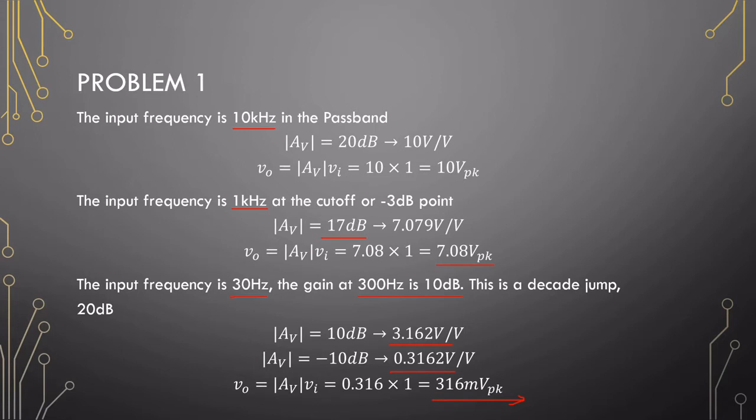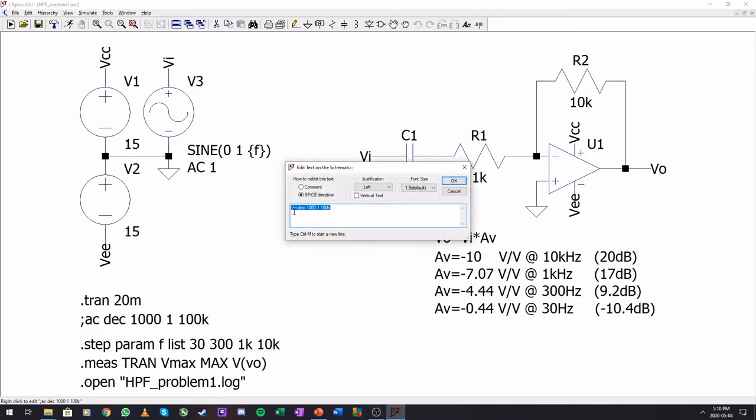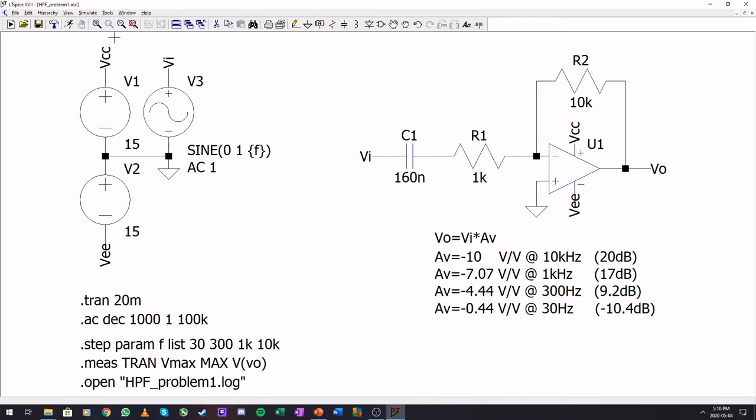Let's jump to the simulation and see if we get the same results. Here is our setup. I went beforehand and checked the Bode plot for the different frequencies and noted it down there at these different points. You will see that this is roughly a 20 dB jump that we have here. I did the setup to run for the different frequencies that I mentioned in the problem.